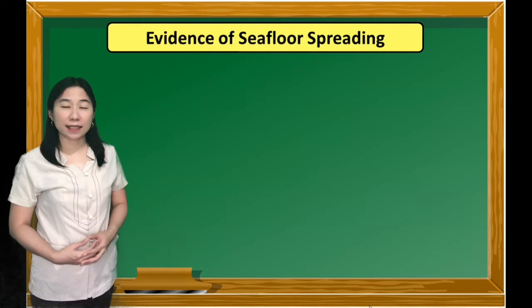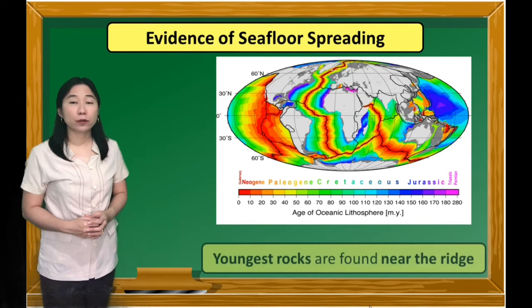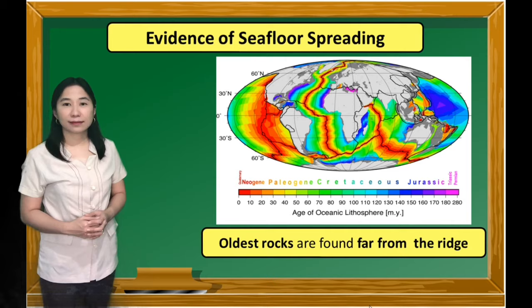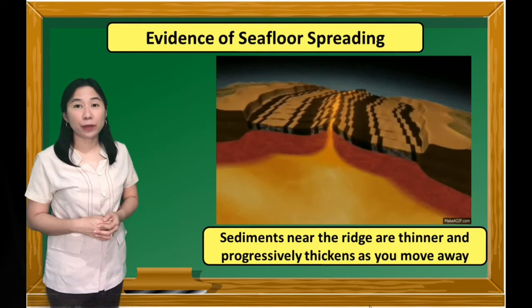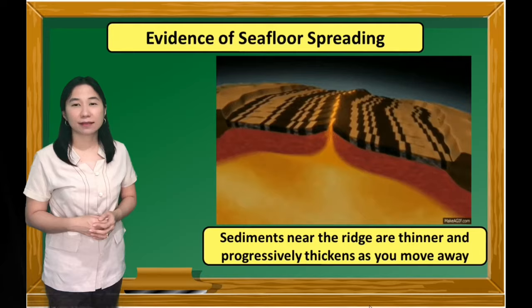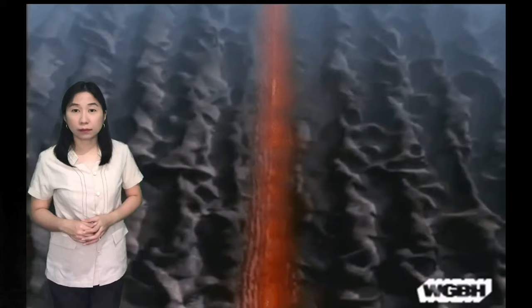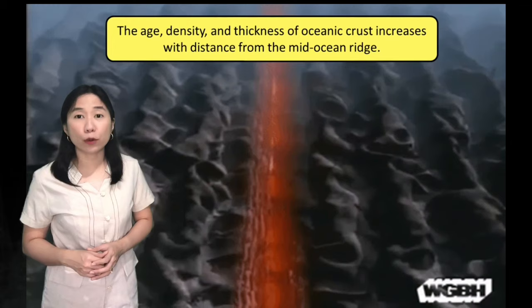The idea of seafloor spreading is supported by evidence. Scientists found that the youngest rocks are near the ridge while the oldest rocks are found far from the ridge. This provides evidence that seafloor spreading and new crust is being created at the ridge. Since there is spreading happening at the ridge, sediments near the ridge are thinner and progressively thicken as you move away. The age, density, and thickness of the oceanic crust increases with distance from the mid-ocean ridge.